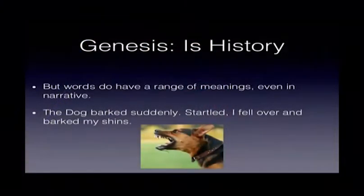The next question is, there's always a 'but', and that is that some words have a range of meanings even within historical narrative. For example: 'The dog barked, startled, I fell over and barked my shins' — I scraped the front of the skin off my legs. So we've used the same word in different ways.